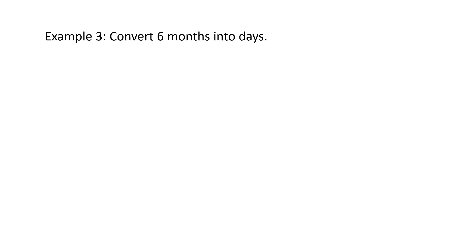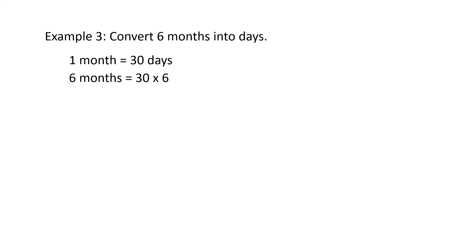Third, convert 6 months into days. We know that in a month there are 30 to 31 days — here we take 30. So in 6 months, the number of days is 30 multiplied by 6, which equals 180 days.